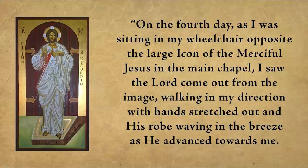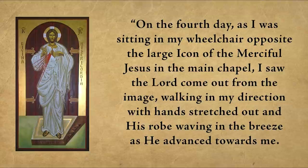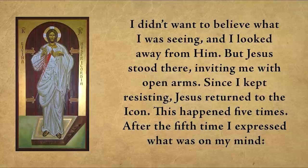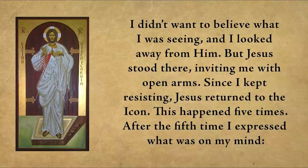But the story does not end there. Again, here are Ugo's words: 'On the fourth day, as I was sitting in my wheelchair opposite the large icon of the merciful Jesus in the main chapel, I saw the Lord come out from the image, walking in my direction with hands stretched out and his robe waving in the breeze as he advanced towards me. I didn't want to believe what I was seeing and I looked away from him, but Jesus stood there inviting me with open arms. Since I kept resisting, Jesus returned to the icon. This happened five times.'